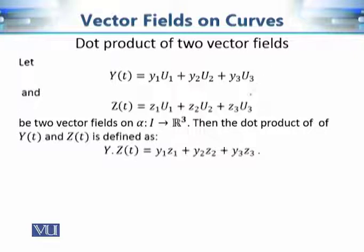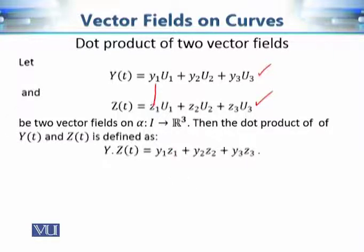We can also calculate the dot product of any two vector fields on a given curve. The calculation is parallel to the dot product of two vectors: multiply y₁ with z₁, y₂ with z₂, y₃ with z₃, and then add all these quantities. The result is a real-valued function of the parameter t.